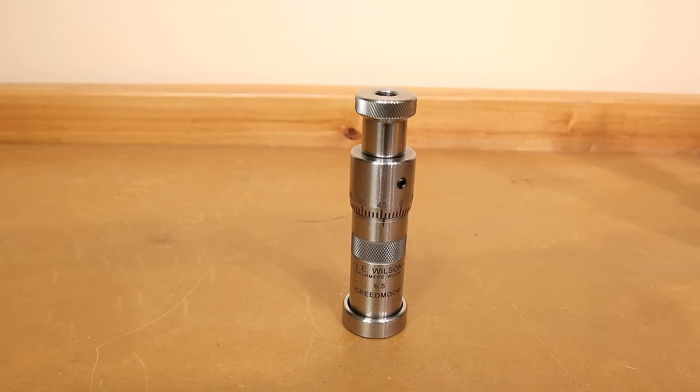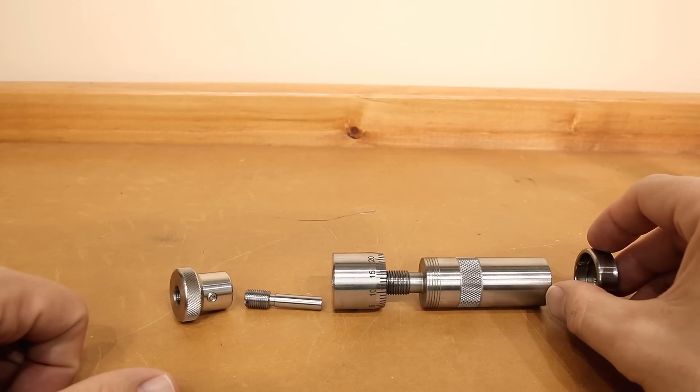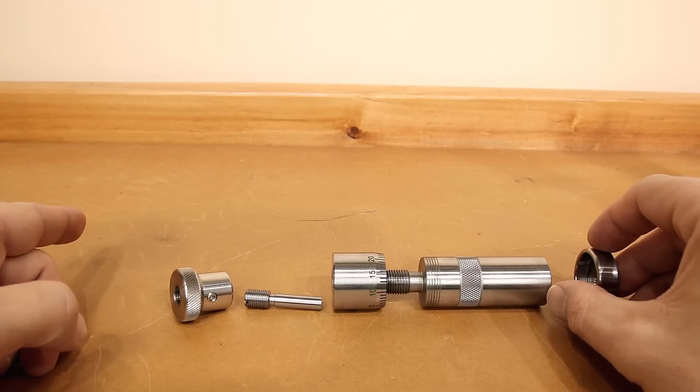When it comes to our die, let's look at all the individual pieces and show exactly how they come together to make a very high quality seating die. This is the entire die disassembled. We'll start off on one end and go to the other.